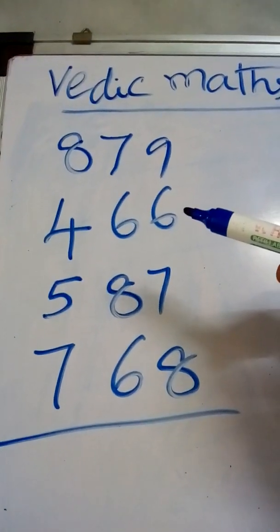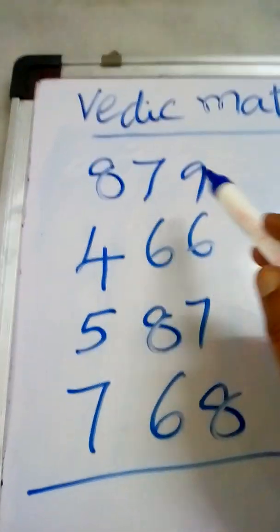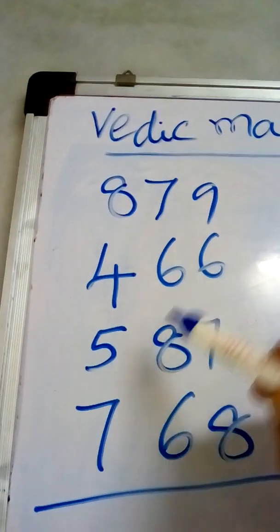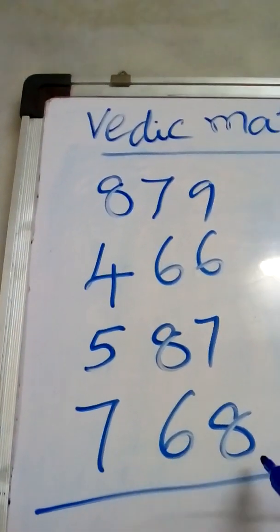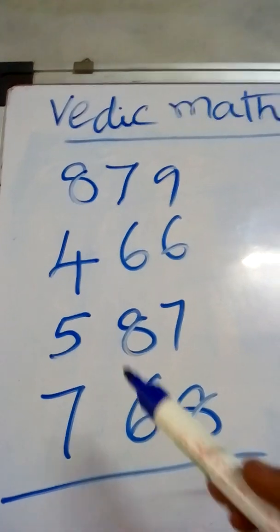By practicing this, 879, 466, 587, 768. So, this is the dot method.